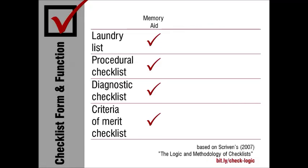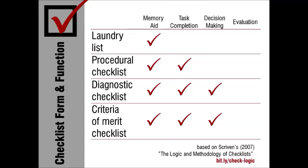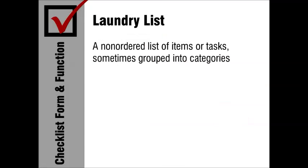The common denominator of all checklists is that they serve as memory aids so we don't forget important items or considerations. All of these types of checklists, except the laundry type, help guide users through a particular task or process. Diagnostic and criteria of merit checklists both support decision making, but it's only the criteria of merit checklist that directly supports evaluation conclusions.